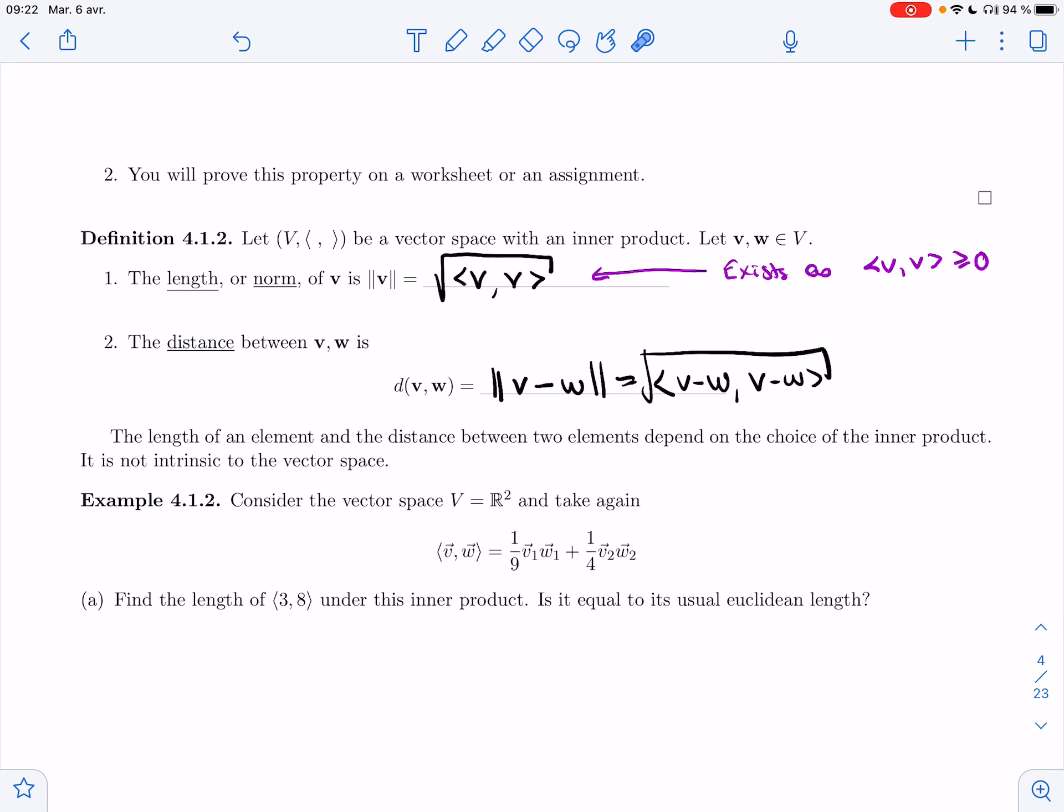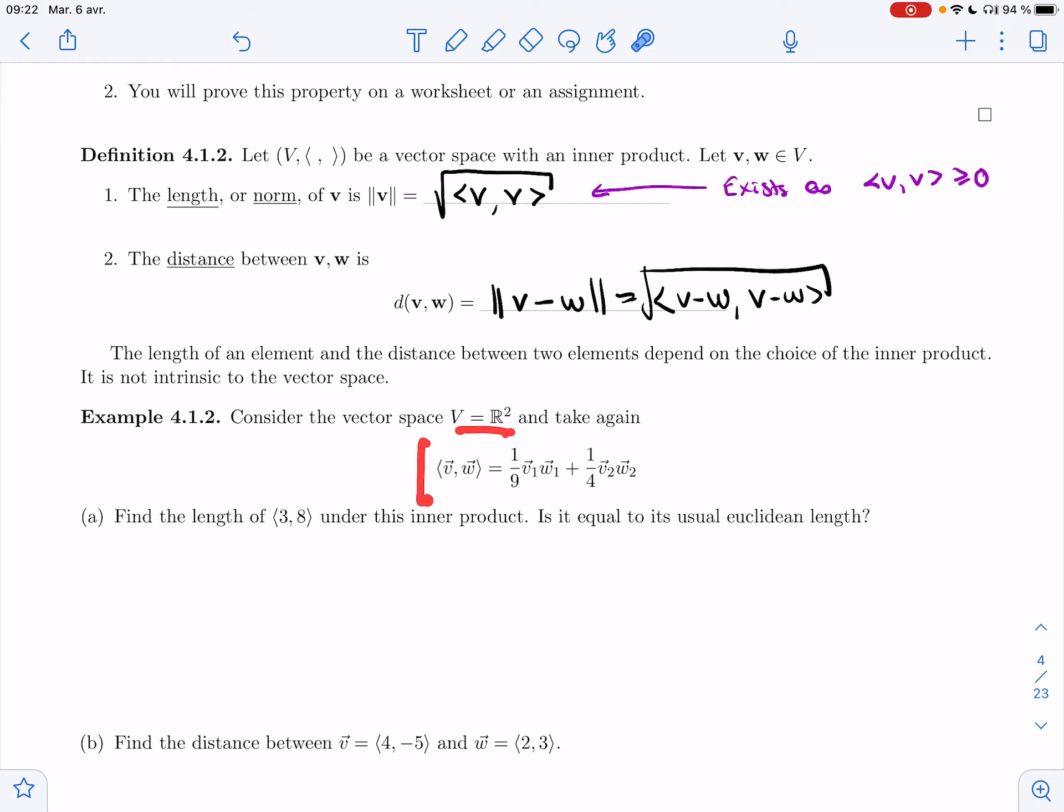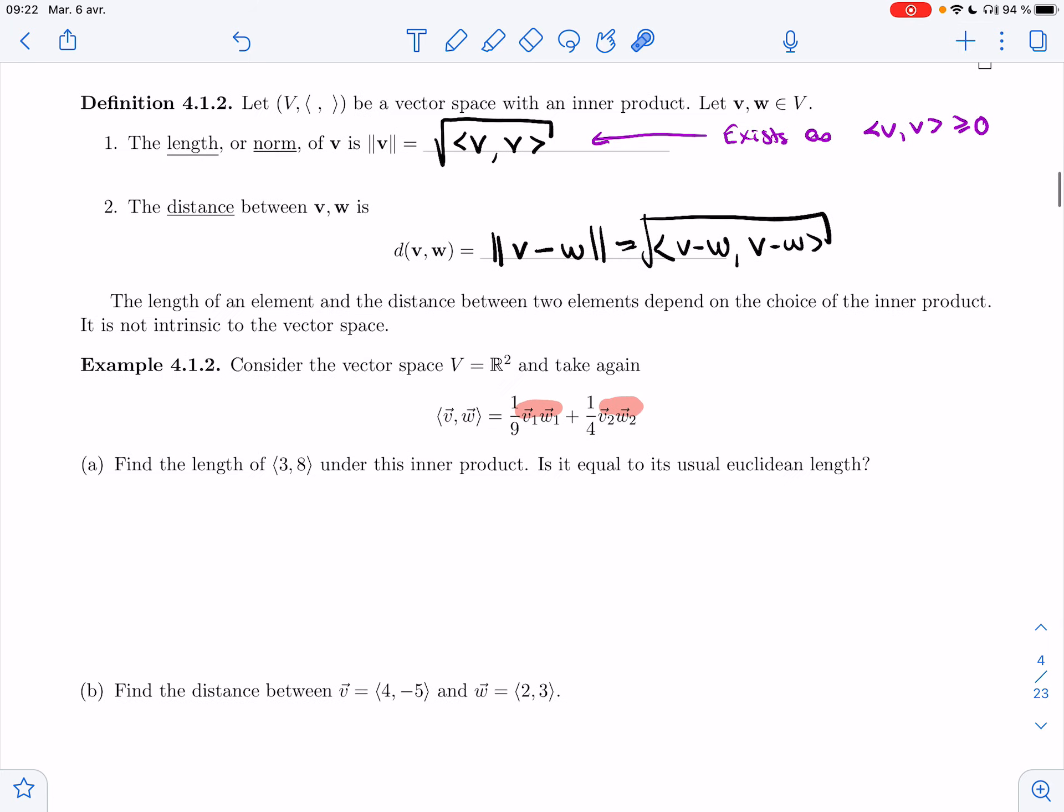So to make that point clear, I'm going to look at R². We have this new - again, no arrows here - we have this new dot product. So I want to compute the length of a vector using this dot product, and I'm going to compare it to the length using the regular dot product.